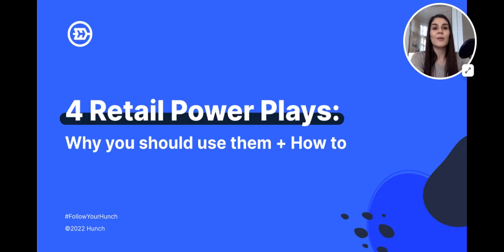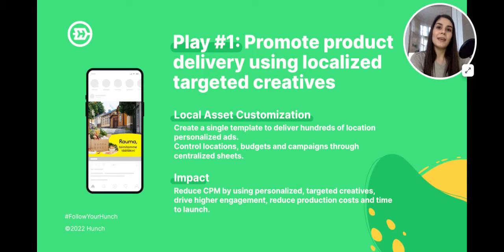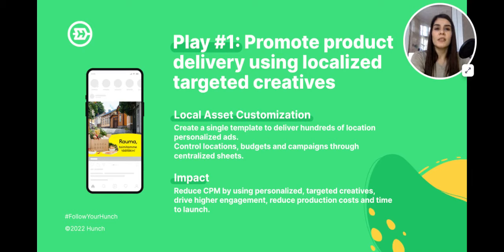Which brings us to the heroes of our video: the four retail power plays, why you should use them, and how to implement them in your localized campaigns. Play number one: promote product delivery using localized targeted creative. If you're targeting a particular neighborhood, city, or state, find out what makes people tick — a phrase, a local saying, prominent places, or even the skyline — because inauthentic, superficial attempts to localize ads are instantly ignored. Instead, focus on audience research to come up with ideas for creatives and keep cycling through those ideas to A/B test them on your audience.